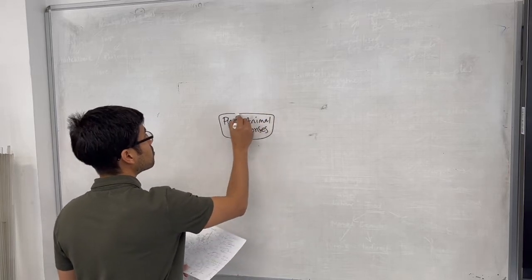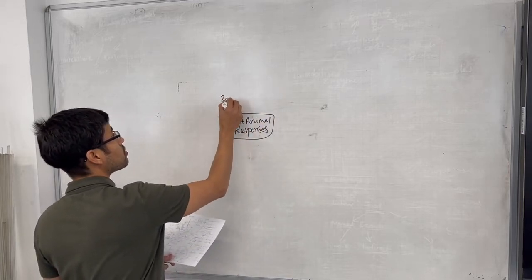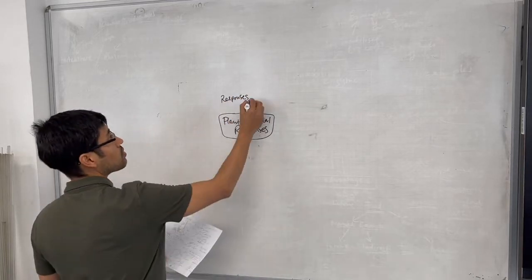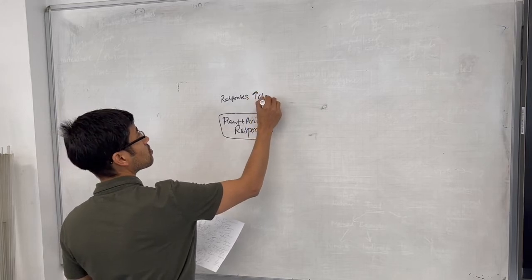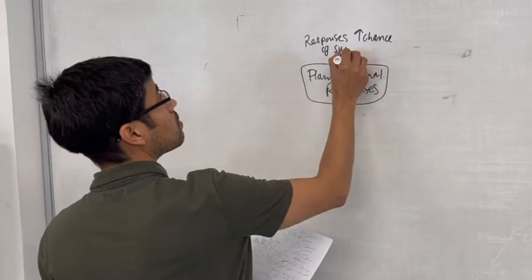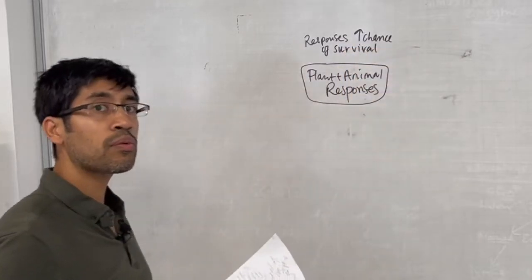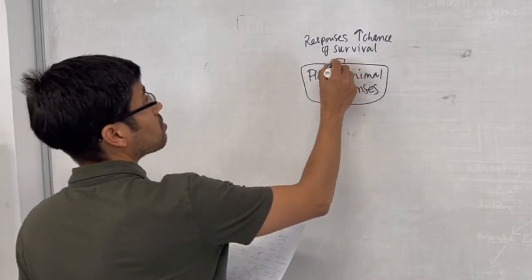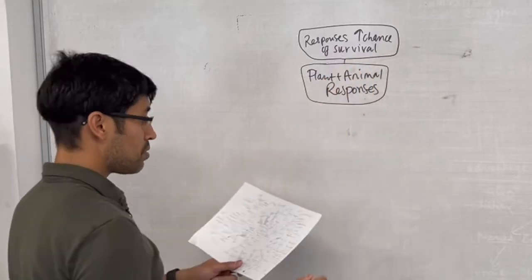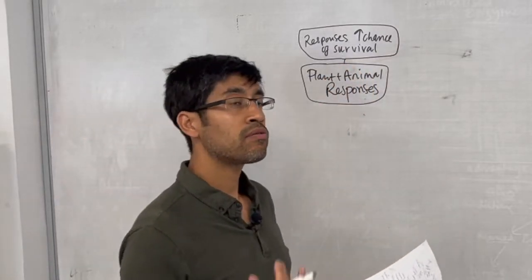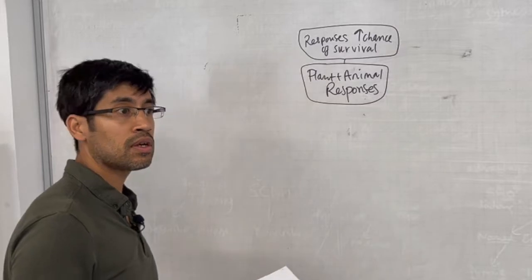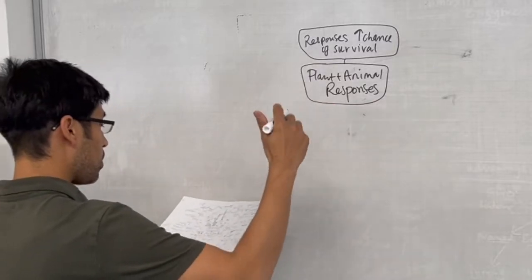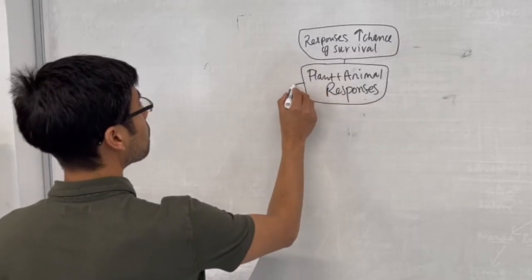What I've done is made a little comment that responses increase the chance of survival. Whether we're talking about reflex responses or phototropism, all of these things increase the chance of that organism being able to survive in changing environments. That's a unifying concept. So let's begin with plants and plant responses.